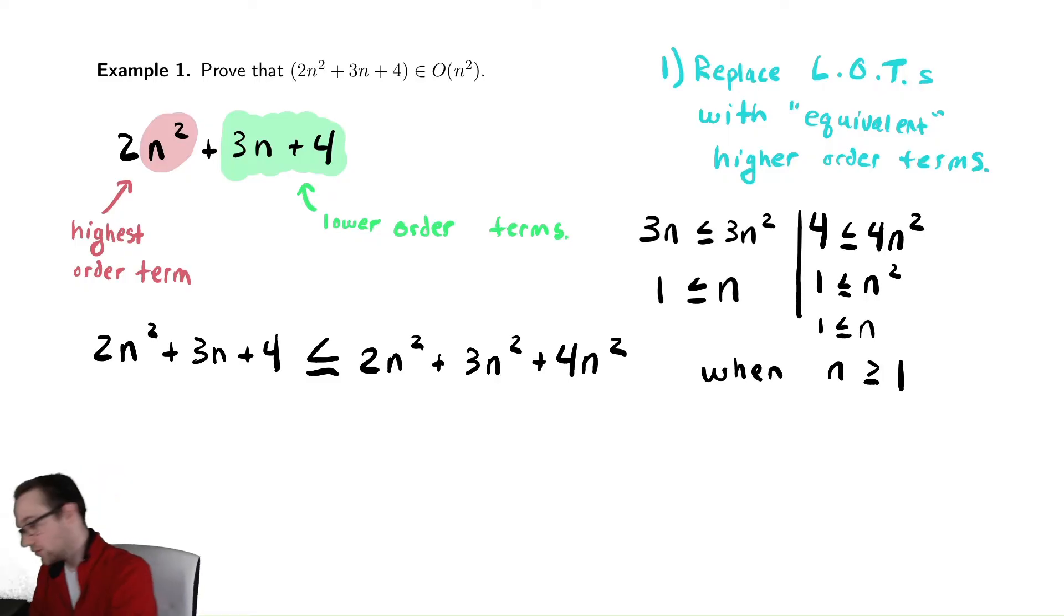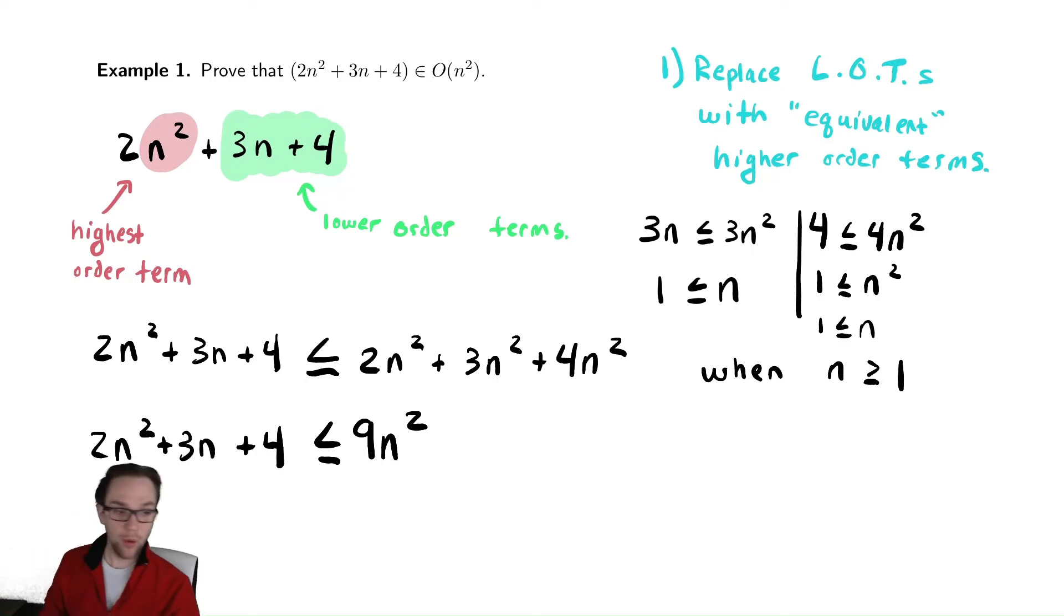Why is this helpful? Well, I'm going to collect all the like terms on the right-hand side now and I'm left with 9n². The left-hand side remains 2n² + 3n + 4. So what have I done? I have the function I started with 2n² + 3n + 4 is less than or equal to a constant times n².